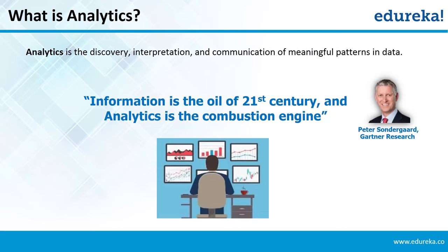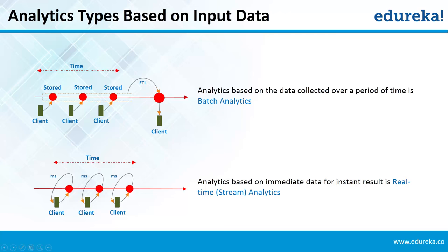If we try to categorize analytics on the basis of input data, we discover two types: batch analytics and real-time analytics. In batch analytics, data is collected over a period of time — it could be an hour, a day, a week, or even years — and analytics is performed on this collected data at a later point in time to bring out insights like trends. In real-time analytics, we have immediate data coming in micro or nanoseconds on which analytics is performed to get instant results.